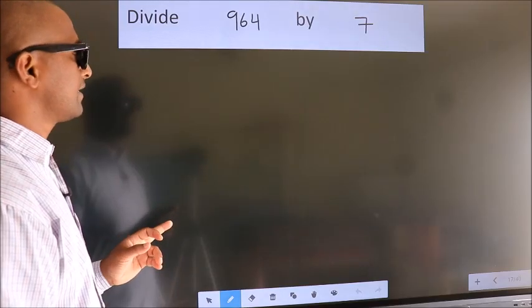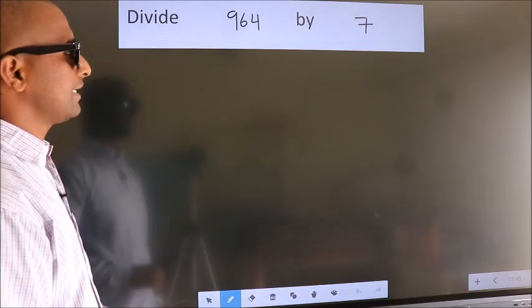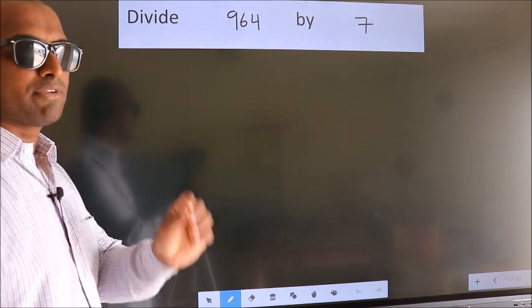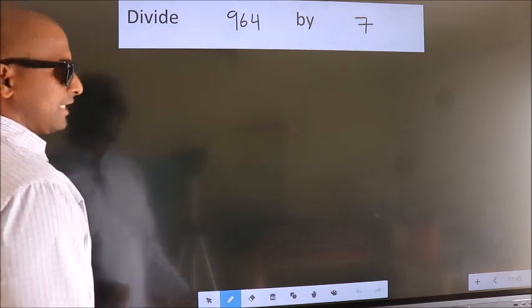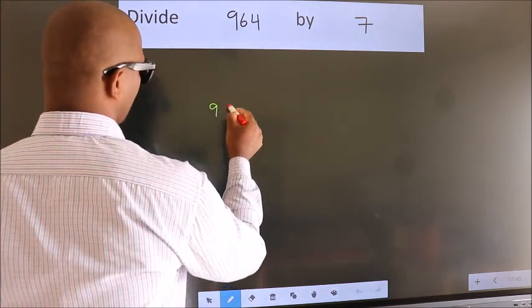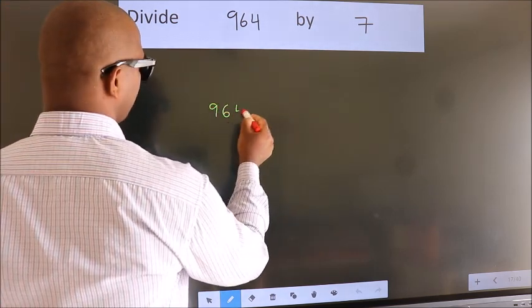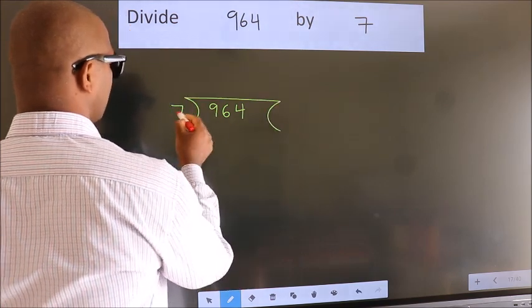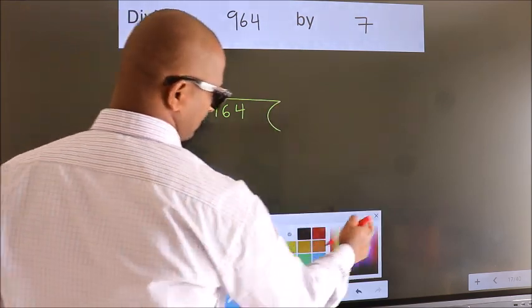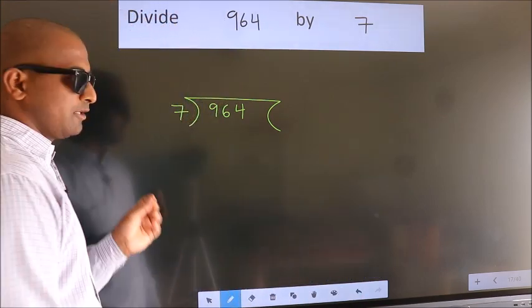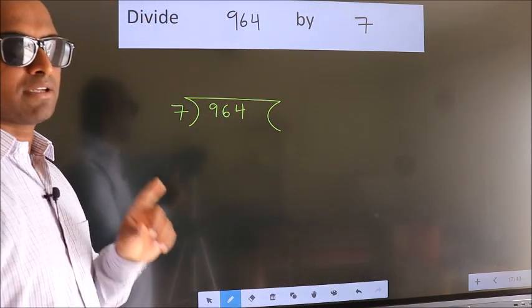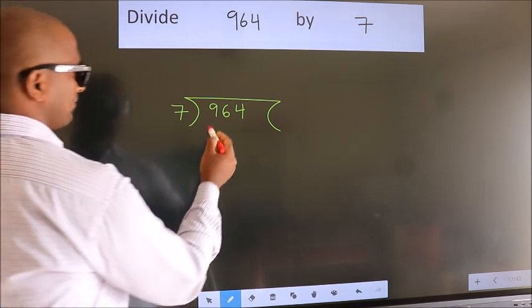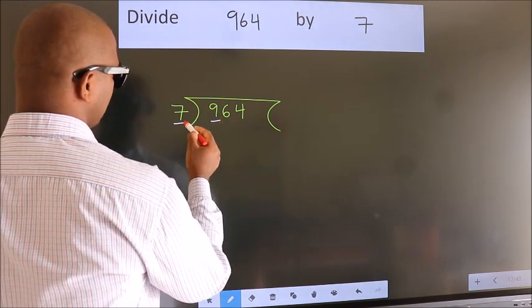Divide 964 by 7. To do this division, we should frame it in this way: 964 here, 7 here. This is your step 1. Next, here we have 9, here 7.